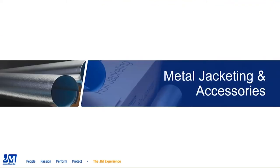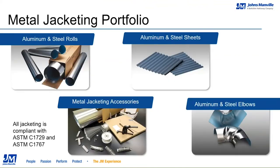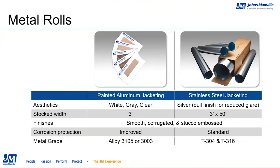All of our jacketing is compliant with ASTM C1729 or C1767 for aluminum and stainless steels. We provide aluminum, painted aluminum, and stainless steel in rolls, sheets, accessories, and elbows. For rolls, painted aluminum is available in clear, white, and gray; stainless steel is typically silver for reduced glare. Finishes available across all metals include smooth, corrugated, stucco embossed, or combinations. Metal grades are 3105 or 3003 alloy for aluminum, and 304 or 316 for stainless steel.